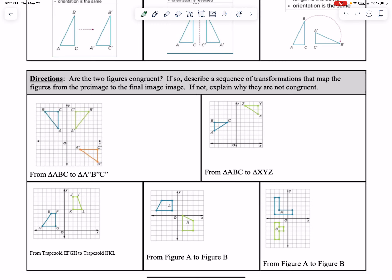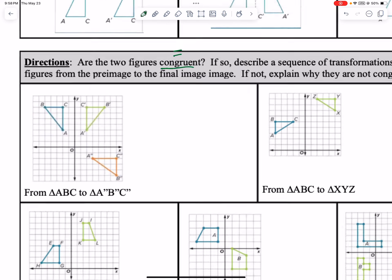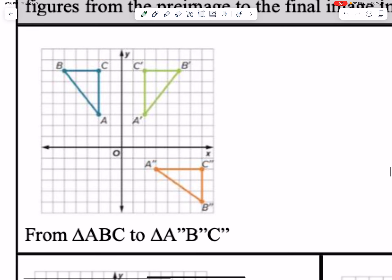The first part we're just going to identify: are the two figures congruent? Remember, congruent means equal to each other in size and shape — same side lengths, same angles. So let's go ahead and determine congruence. If so, we need to describe the sequence of transformations that map the figure from the pre-image to the final. If not, explain why they're not congruent.